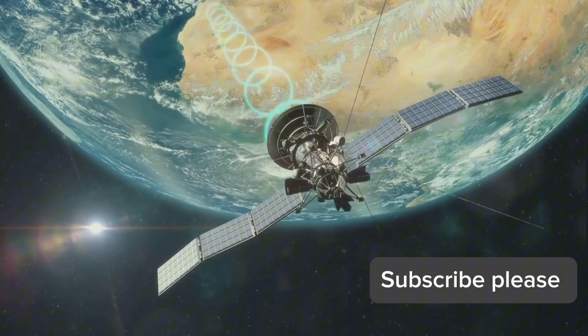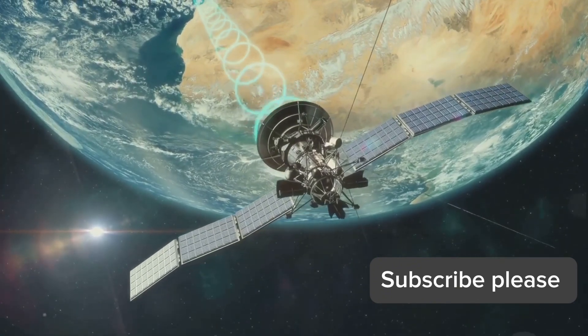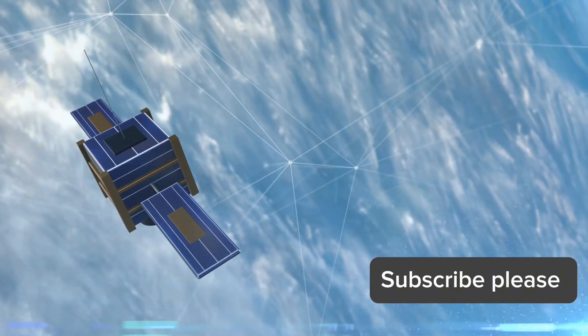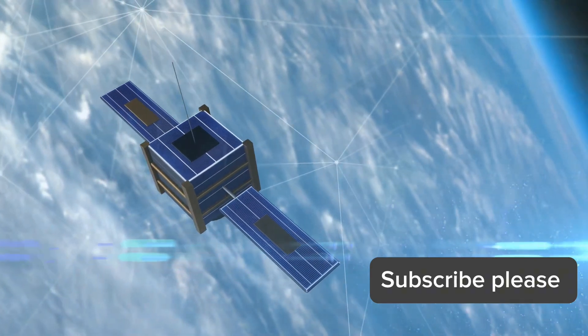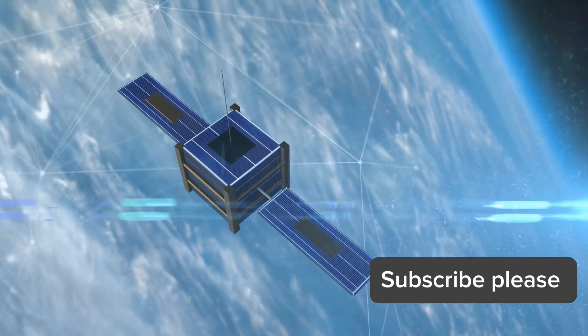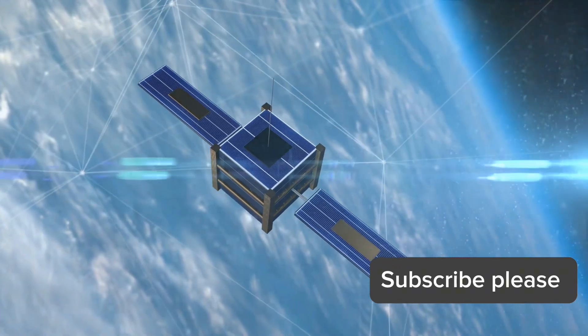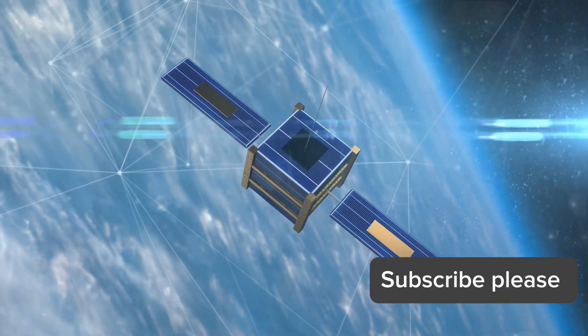But the journey doesn't end there. The ground station then sends your requested data back up to the satellite. The satellite, in turn, transmits this data back to your user terminal, completing a round trip that might seem lengthy but in reality happens faster than you can say Starlink.